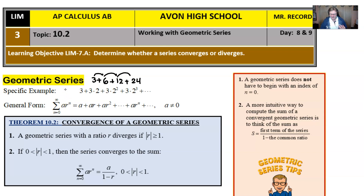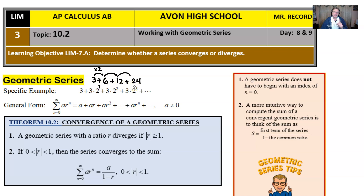What is this 'a' that we speak of? The 'a' is going to be the first term. The r is the common ratio — times 2 in our example — and raising that to the nth power facilitates this whole idea of the power getting bigger and bigger.